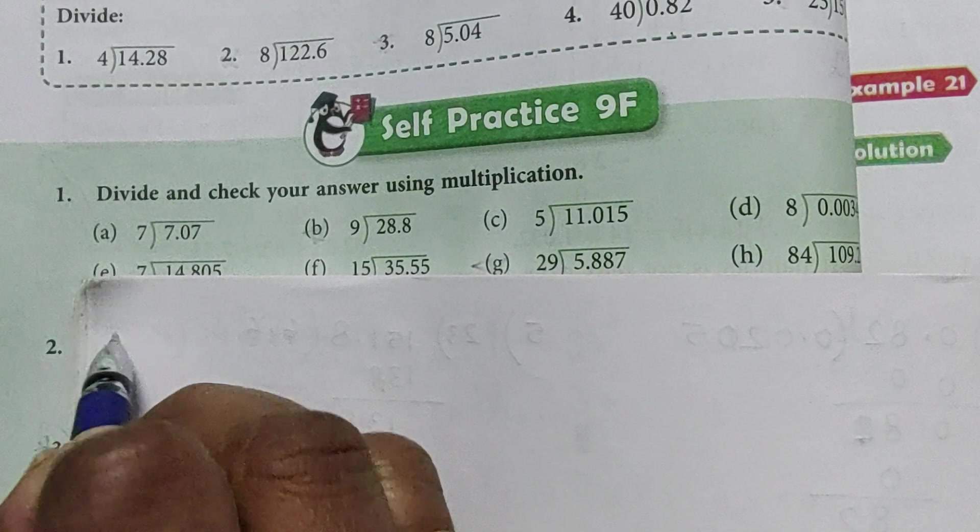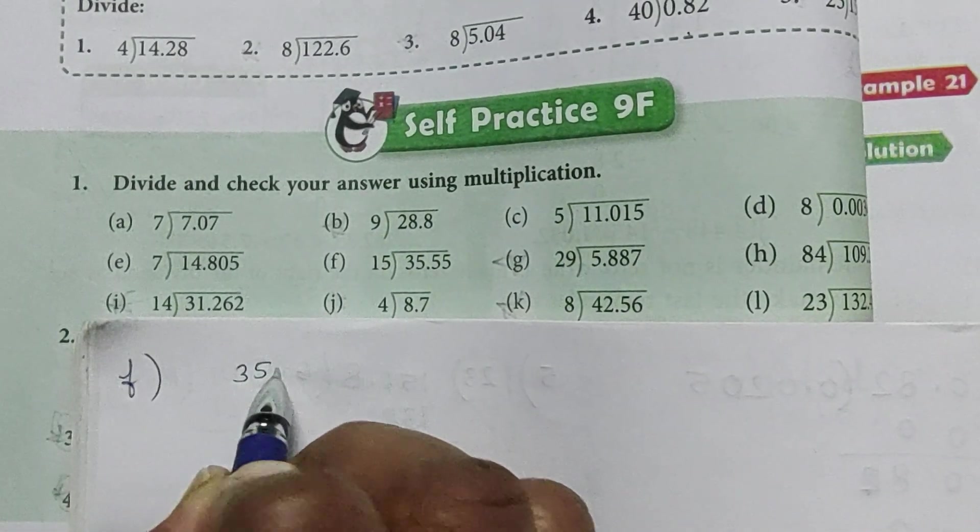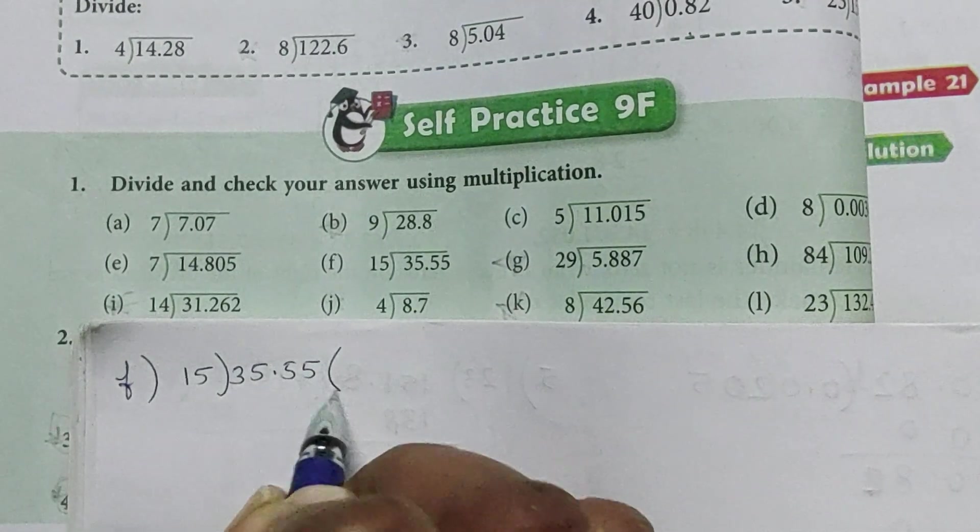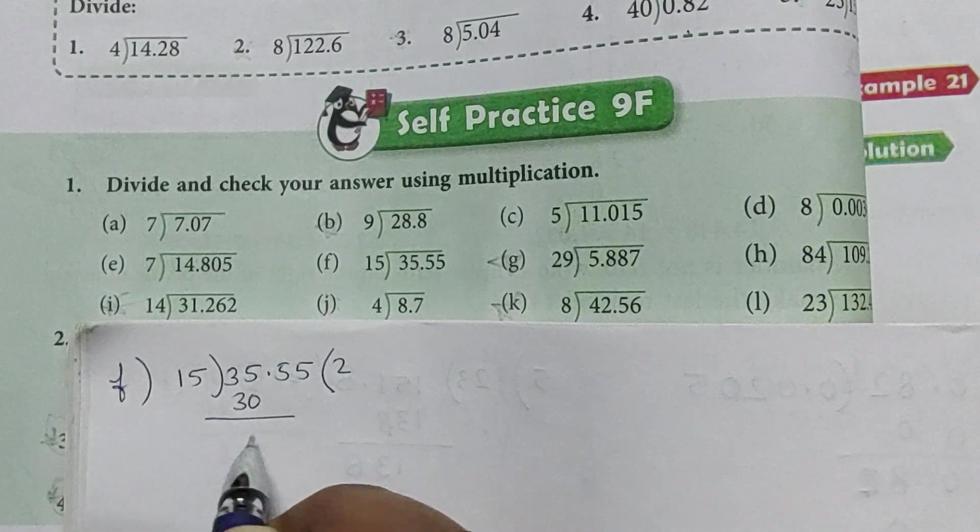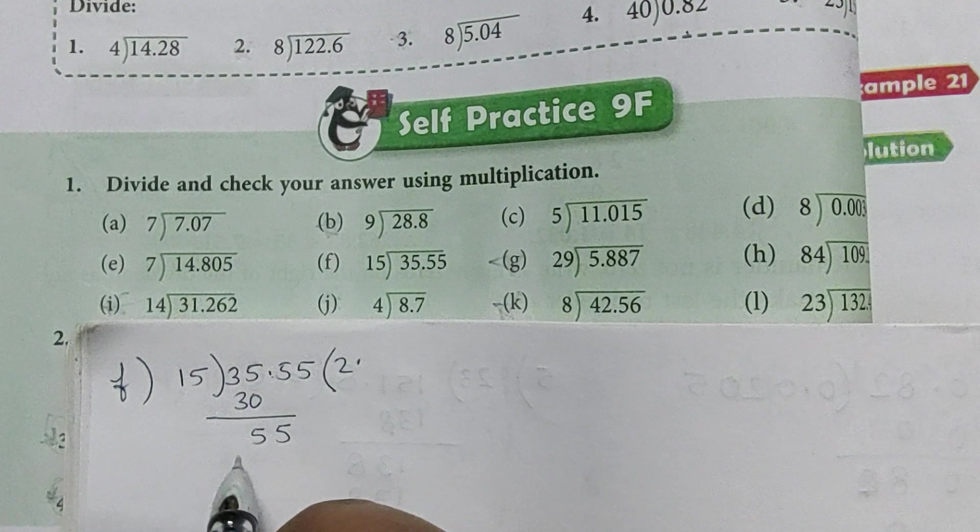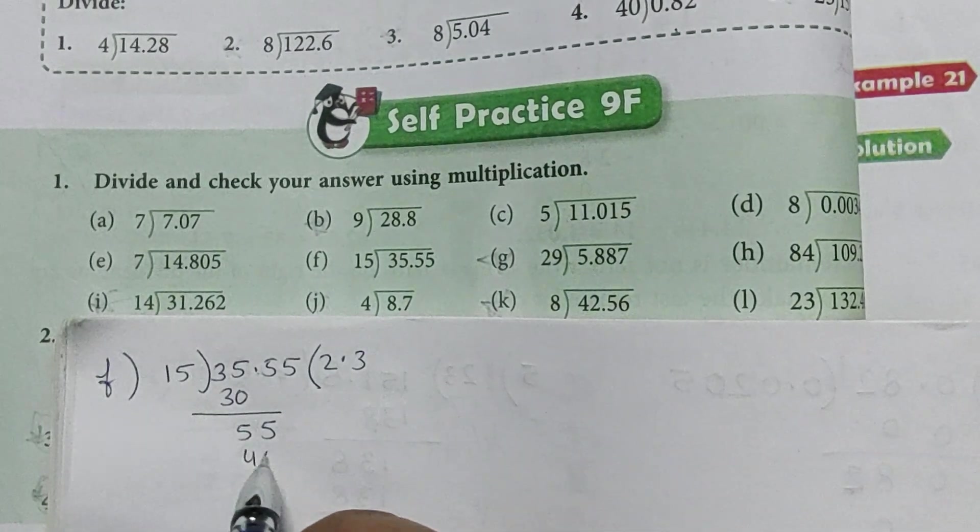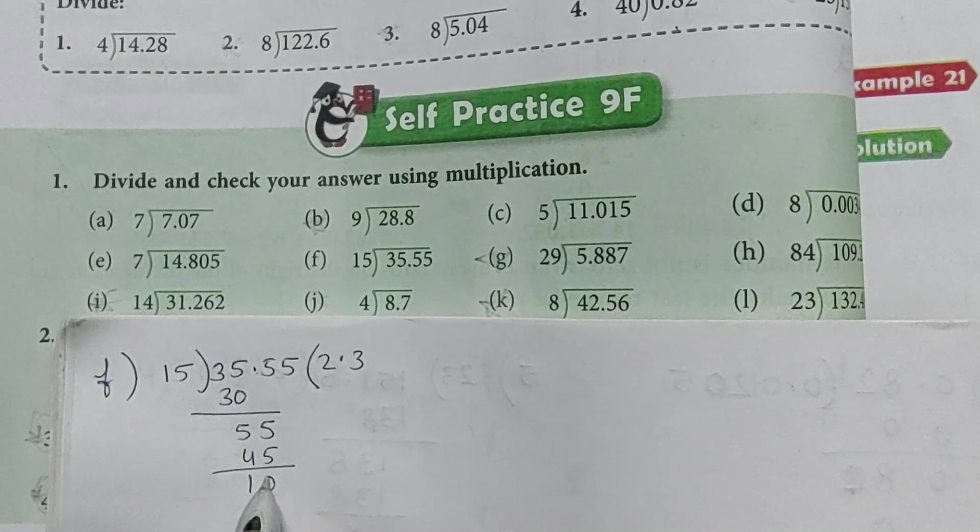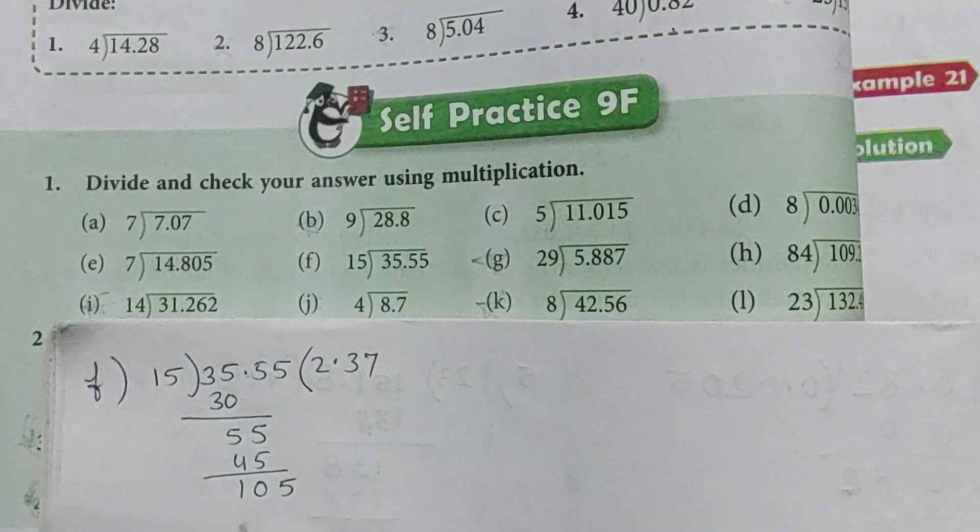Now part F: 35.55 divided by 15. 15 into 2 is 30. 35 minus 30 is 5. Point. Bring down 5. 15 into 3 is 45.